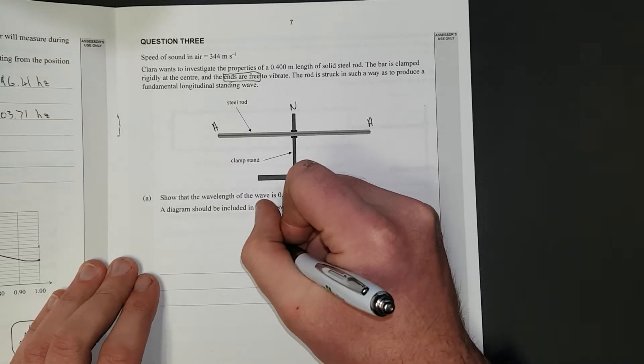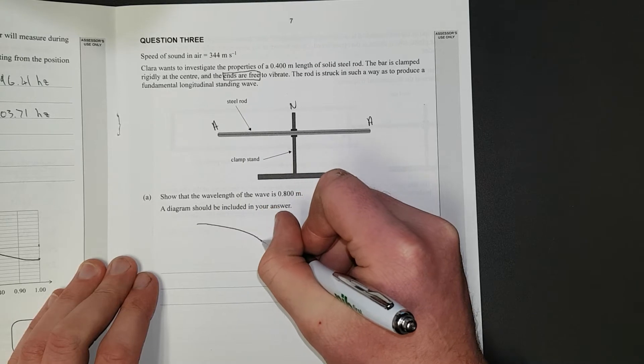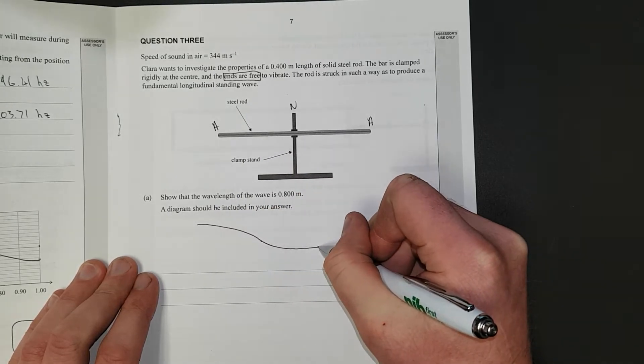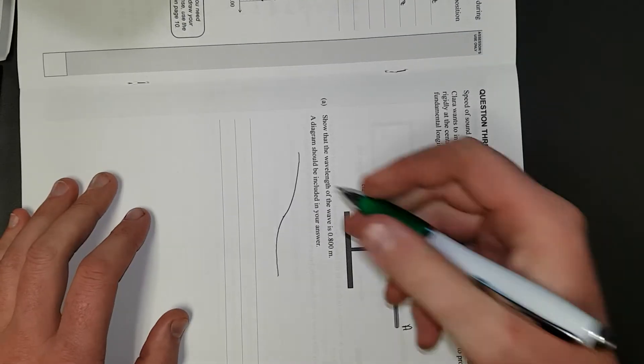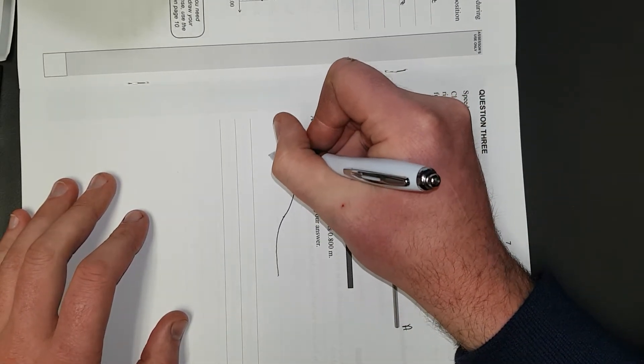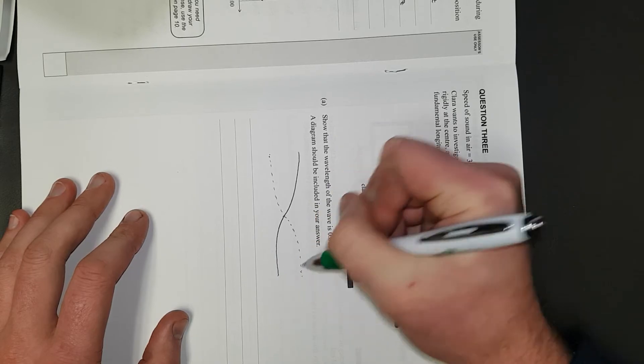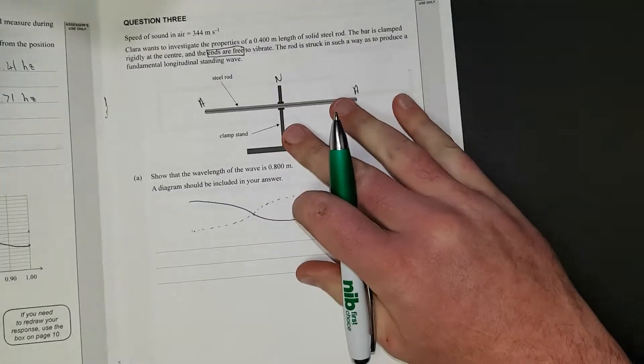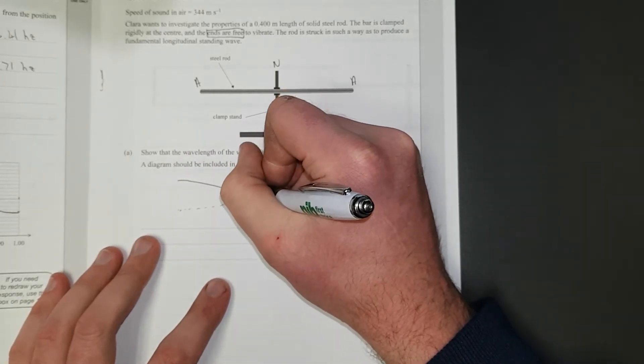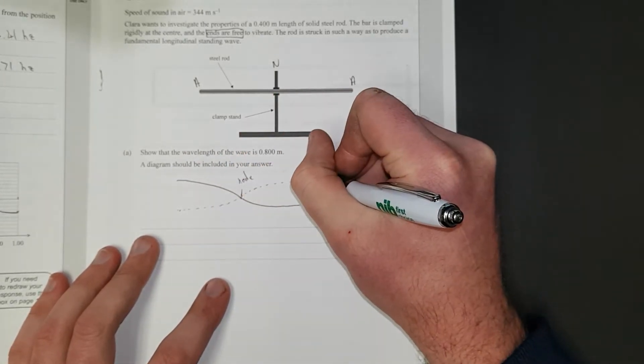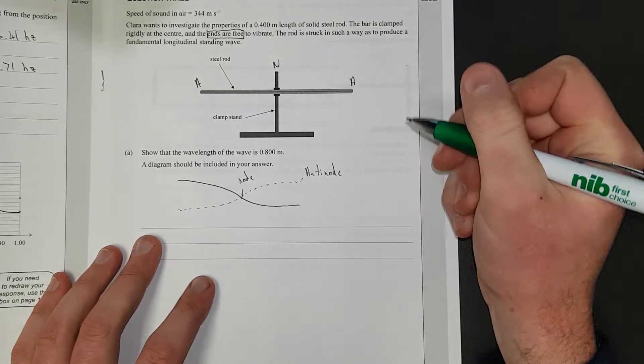Right, so I'll sketch it as neatly as I can. And then I'm going to draw this vertically so I can actually do it. This is a node. I'm going to note that. This is an anti-node, and this is an anti-node.